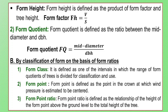By classification of form on the basis of form ratios: Form Class is defined as one of the intervals into which the range of form quotients of trees is divided for classification and use. Form Point is defined as the point on the ground at which wind pressure is estimated to be centered. Form Point Ratio is defined as the relationship of the height of the form point above ground level to the total height of the tree.